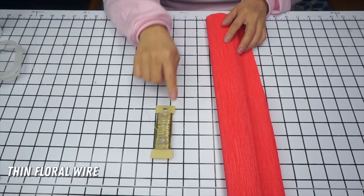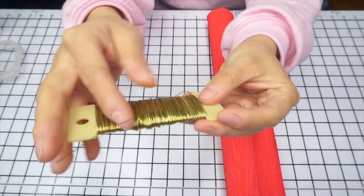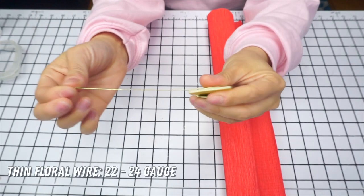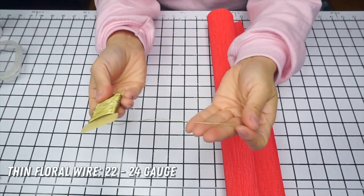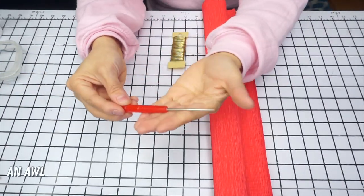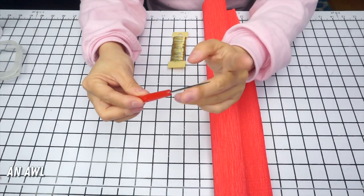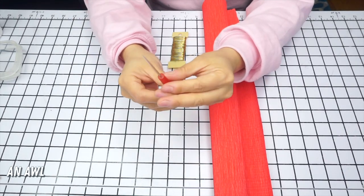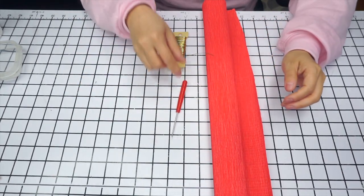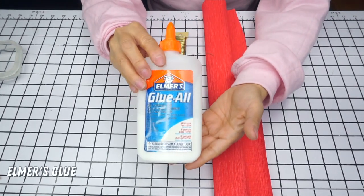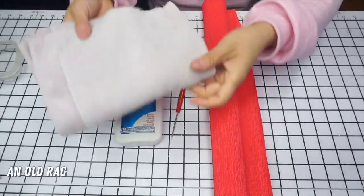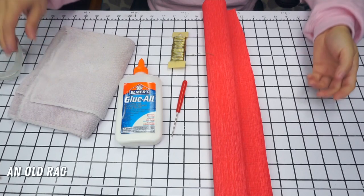You'll also need thin floral wire which is easily found in craft stores and online. Go for a 22 to 24 gauge wire. Next up is an awl, which is a pointy tool meant for poking holes in fabric and leather. Good to have in your crafting stash. We'll use simple Elmer's glue for our lilies and you'll also need an old rag or towel and simple floral tape.